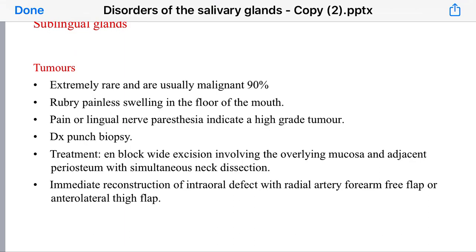The tumor is diagnosed by punch biopsy. Treatment involves en bloc resection — wide excision involving the overlying mucosa, removal of the gland with overlying mucosa and adjacent periosteum, with simultaneous neck dissection depending on the stage of the malignant tumor. This necessitates immediate reconstruction of the intraoral defect with a radial artery forearm free flap or anterolateral thigh flap.